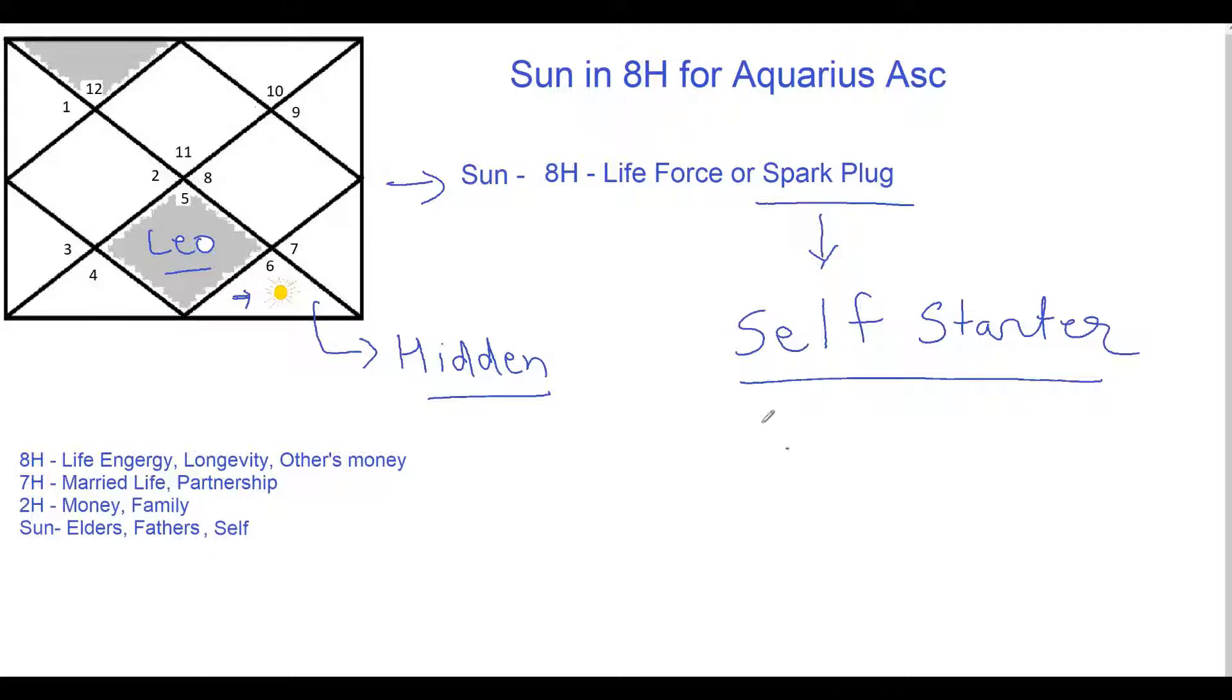Now what happens is because of the eighth house placement they may think of too many things at a time. They might start one thing then abandon that, then start another thing then abandon it, and then start another third thing and get success only after two three attempts. That is very likely if again Saturn and tenth house are supporting that way.